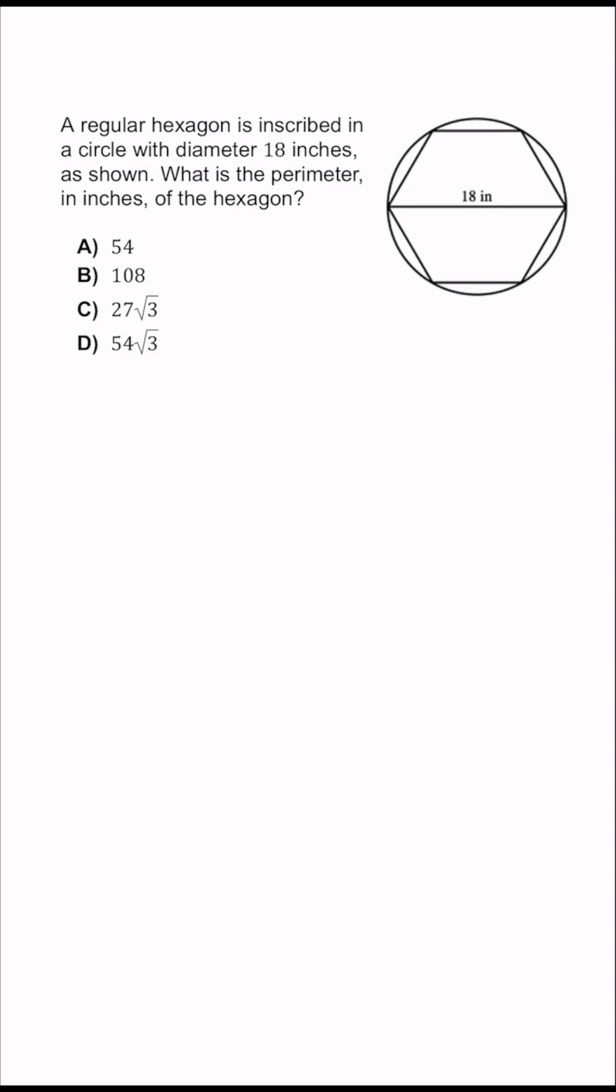Otherwise, let's go ahead and go over the problem together. A regular hexagon is inscribed in a circle with a diameter of 18 inches as shown. What is the perimeter in inches of the hexagon?